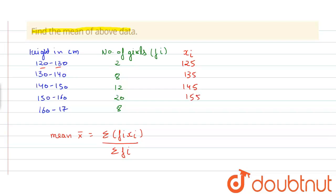So fixi is 2 into 125 which is equal to 250, 8 into 135 which is equal to 1080, and similarly 1740, 3100, and 1320.